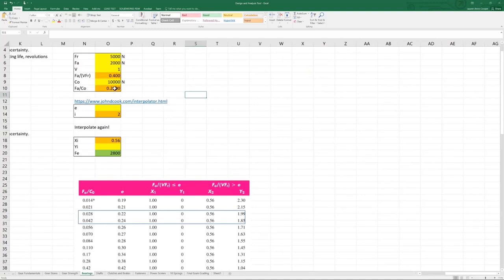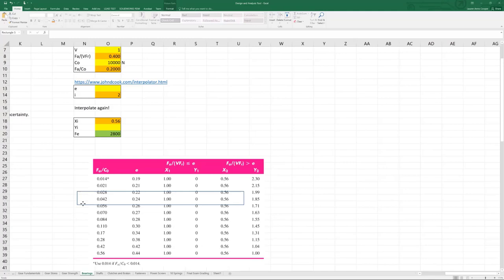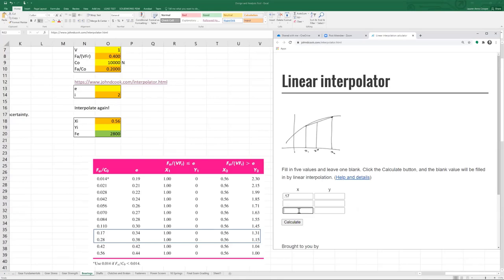We have an FA over C knot value of 0.2. Now we're going to go down to this new table that you should drop in your analysis tool. We don't have an exact value of 0.2 in this column, FA over C knot. It's somewhere in between 0.17 and 0.28. So the first thing we're going to do is interpolate for this value e to figure out if we need to use x1, y1 or x2, y2. I like this really simple linear interpolation calculator by John D. Cook. So we have 0.34. So the e corresponding to an FA over C knot of 0.28 is 0.38. Then we calculate, so 0.35.